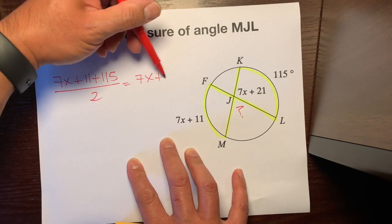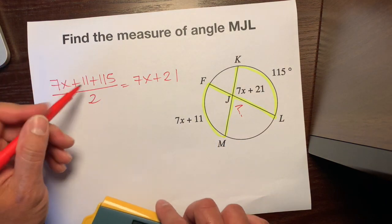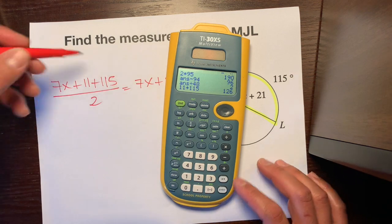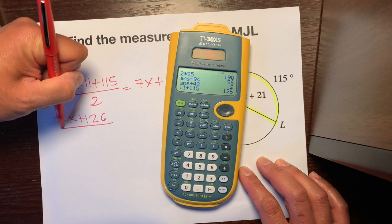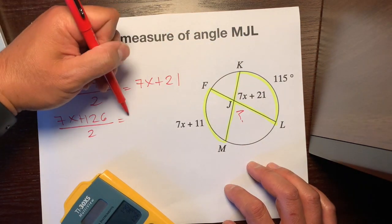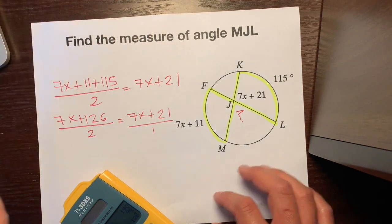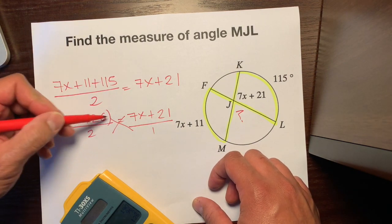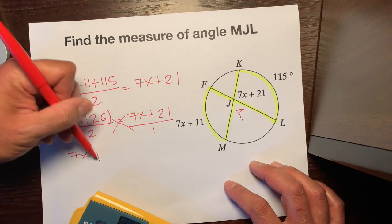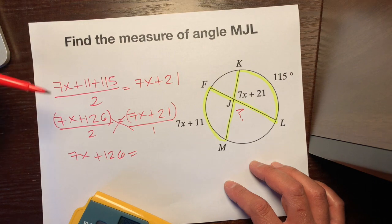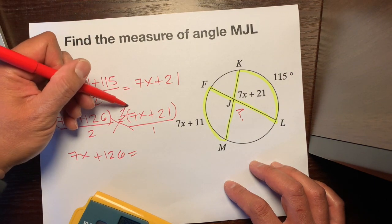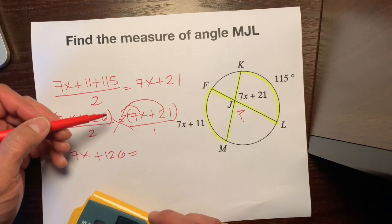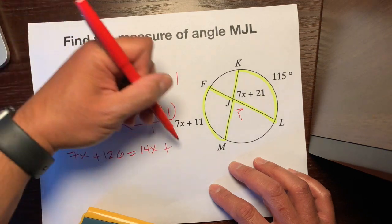We're going to set it equal to 7x plus 21. Let's combine like terms: 11 plus 115 is 126, so we have 7x plus 126 over 2, set equal to 7x plus 21. We put the invisible 1 underneath to make it a proportion, and don't forget to cross-multiply. 1 times all of this is 7x plus 126, equal to 2 times all of this. Distribute the 2: 2 times 7x is 14x, plus 2 times 21 is 42. A lot of people forget to distribute that 2 to the 21.